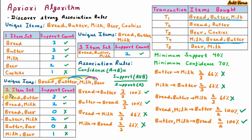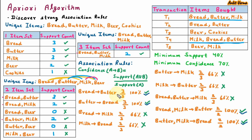So from the 2-itemset and 3-itemset, we have calculated confidence of all accepted combinations. Using the Apriori algorithm, we have discovered four strong association rules: bread implies butter, butter implies bread, bread and milk imply butter, and butter and milk imply bread. In our shop, we must use these combinations of items to attain maximum profit. That's all for today. Thank you.